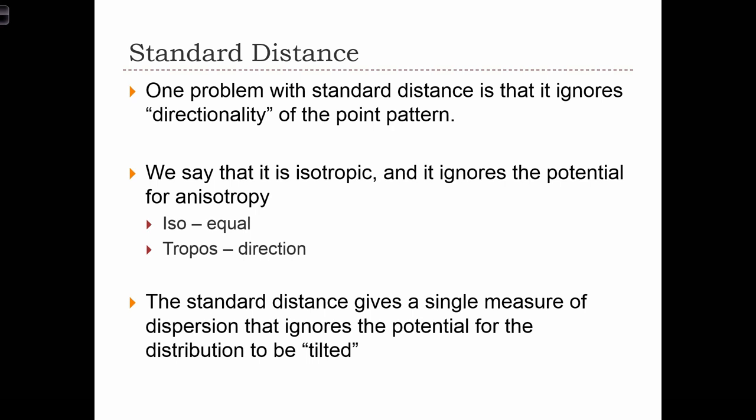So for the case of a standard distance circle, the circle that we end up drawing gives us the impression that the dispersion occurs in all directions away from the mean center, whereas in most point distributions this isn't the case. It ignores the fact that the point distribution might be tilted or elongated in one direction and not the other.